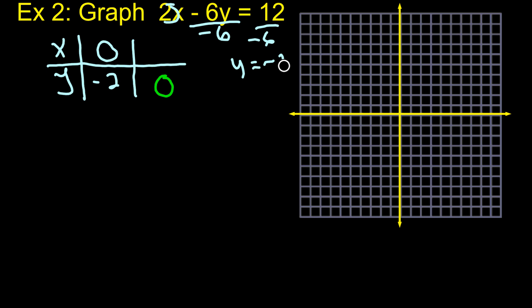All right. Let's do the same thing when Y is 0. So if Y is 0, that means that 6 times 0 is 0. So we get 2X equals 12. Then we'll divide by 2. And we get X equals 6.